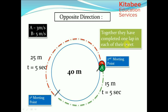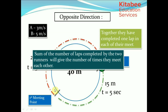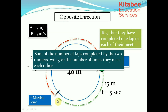Together they complete one lap at each meet. When they met for the first time, collectively they completed one lap; at the second meeting again one lap together. So we can deduce that the sum of the number of laps completed by the two runners gives us the number of times they meet each other. To find the number of meetings, simply add the number of laps completed by them individually.